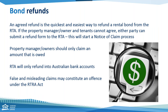The RTA will only refund into Australian bank accounts, so it's really important the RTA has correct bank details — make sure you've got the right BSB and account details. False and misleading claims may constitute an offence under the Residential Tenancies and Rooming Accommodation Act. So again, for agents and owners, only ever claim on the bond what you're entitled to claim. If you have invoices or rent owed, only be claiming those amounts — not claiming the whole bond if you're not entitled to it.